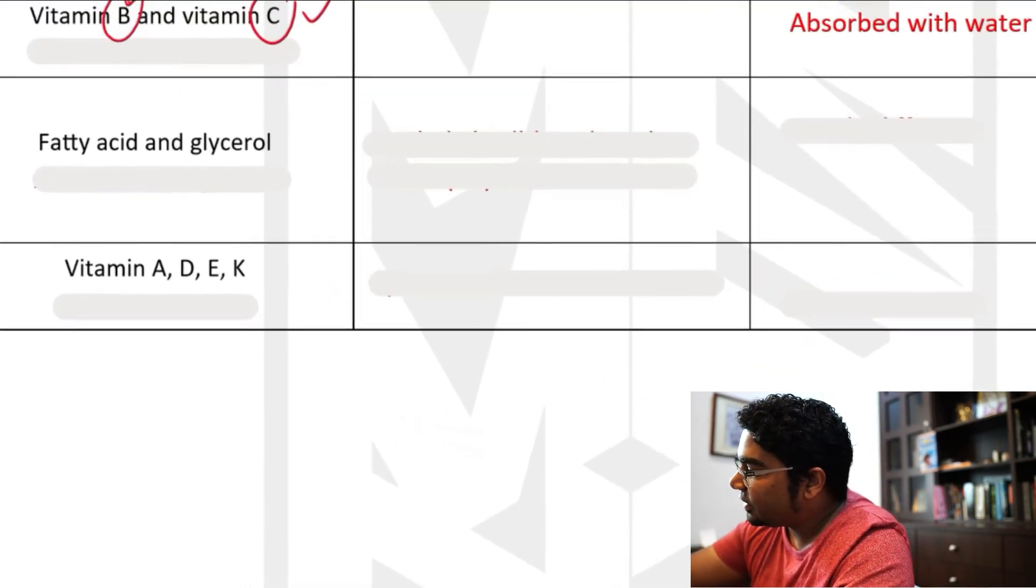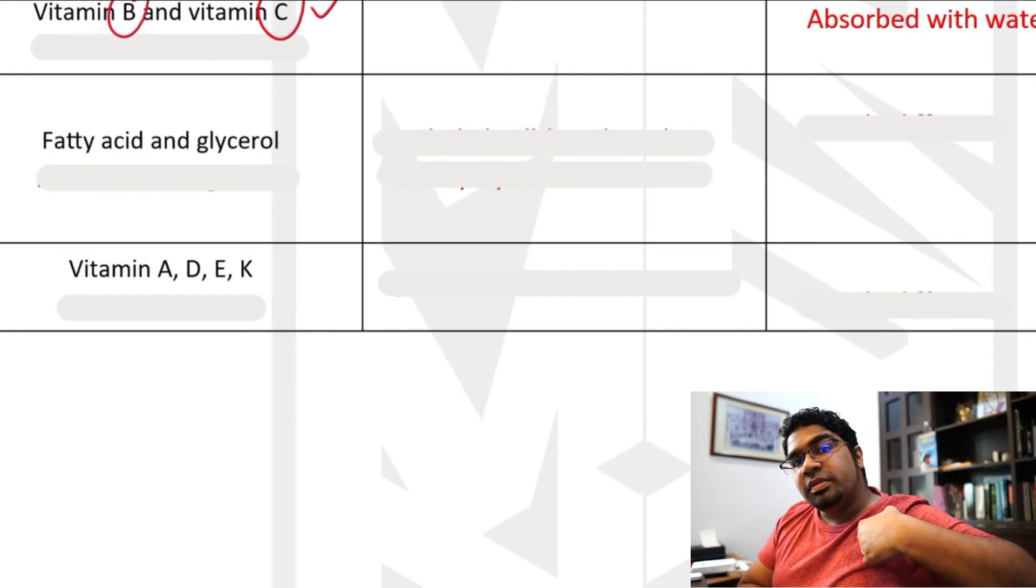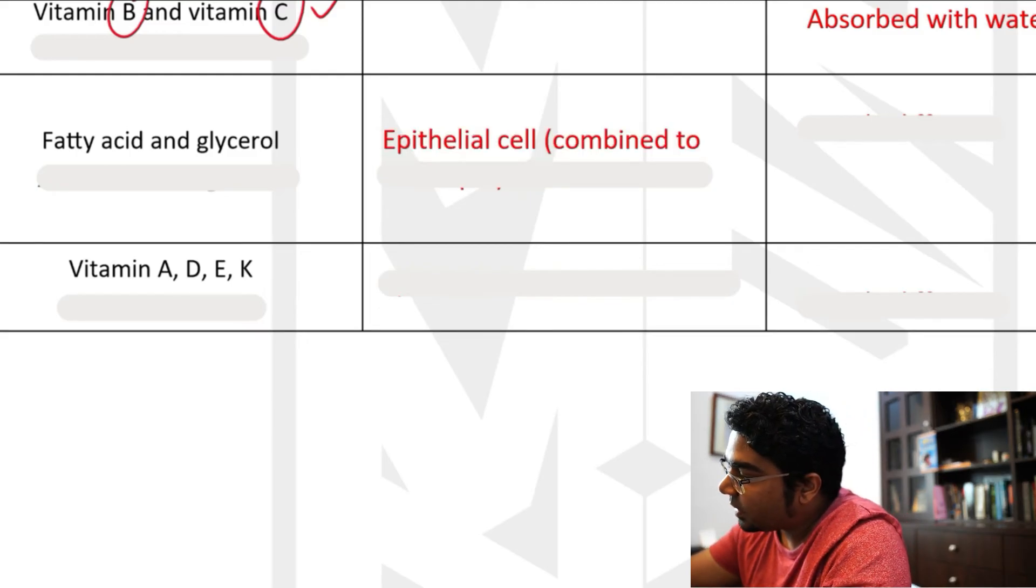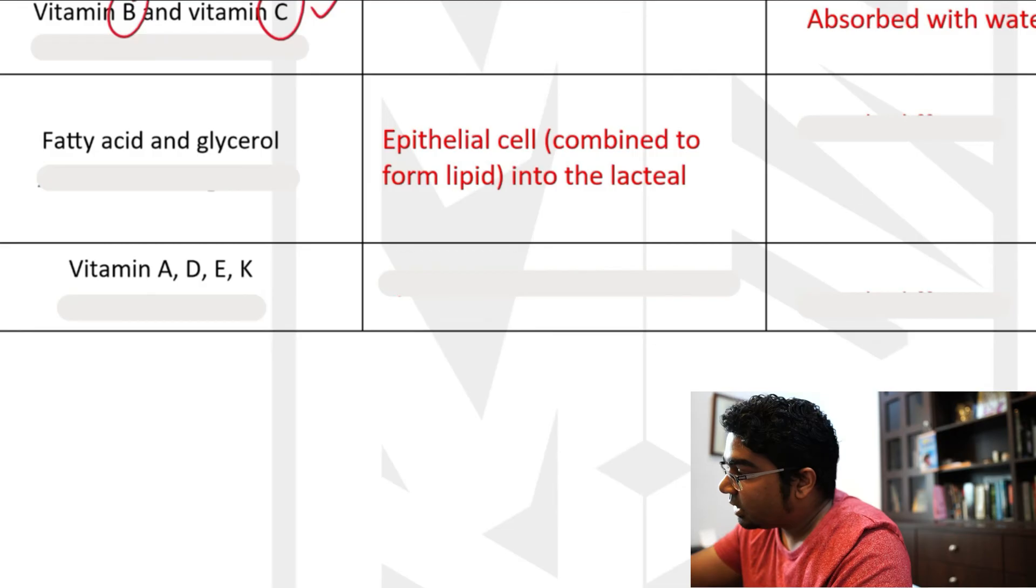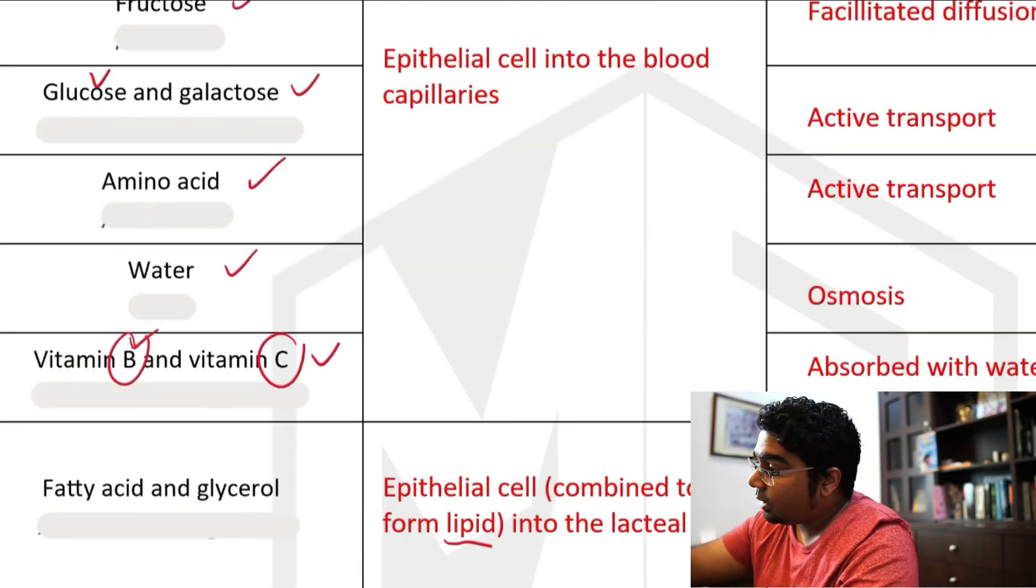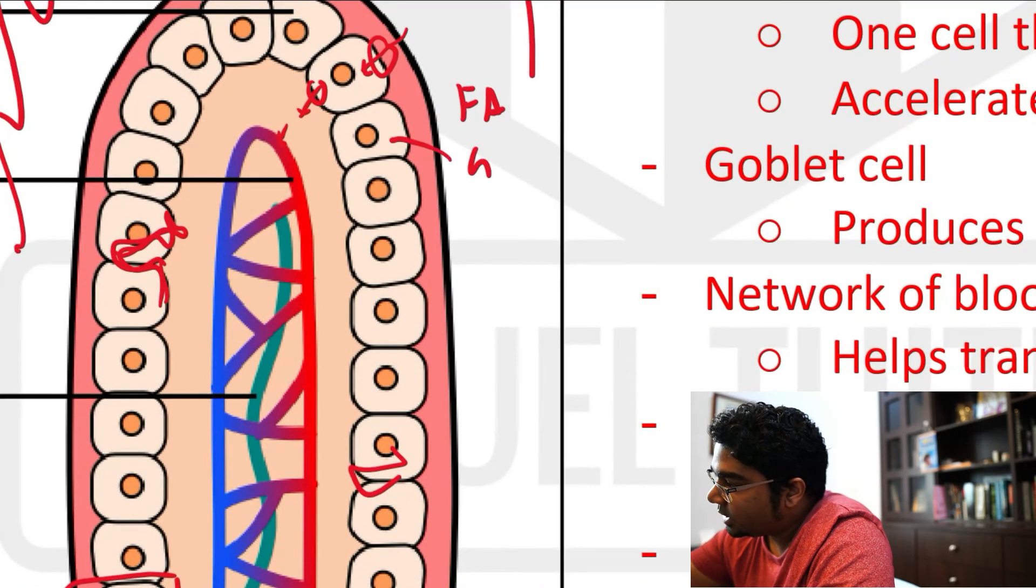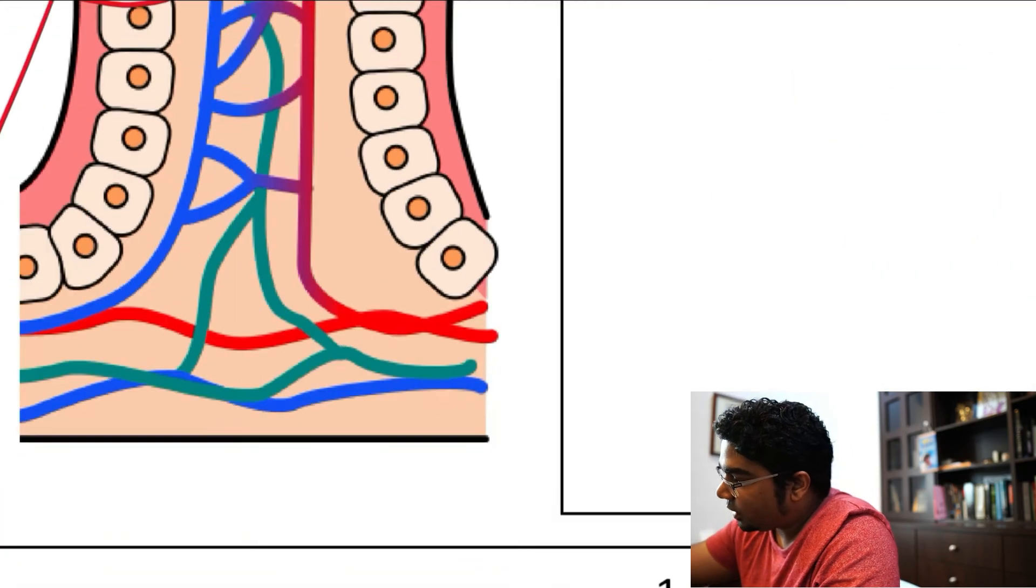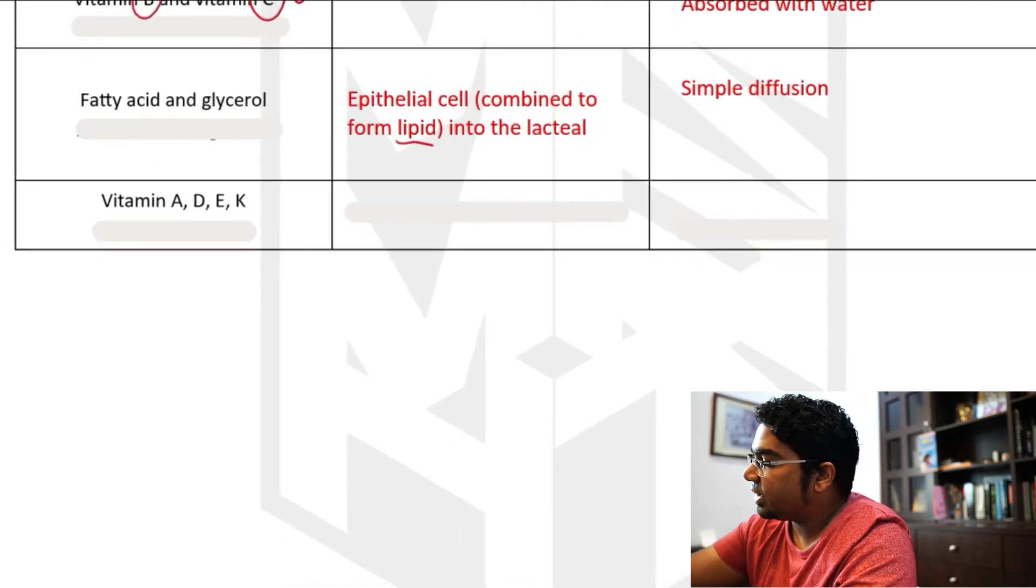Now fatty acids and glycerol are a different story. They do not enter the network of blood capillaries directly. They will enter into the blood later, into the left subclavian vein. But that's another story. So what happens here is fatty acids and glycerol actually enter to the epithelial cell. But here's something special happens. The fatty acids and glycerol will recombine into lipid first. So it becomes lipid first. And then from there, from the epithelial cell, so fatty acids and glycerol enter the epithelial cell, combine to become lipid, and then they go through into the lacteal. So this process occurs by simple diffusion.